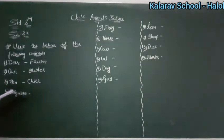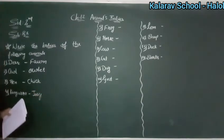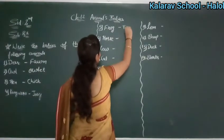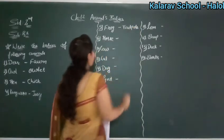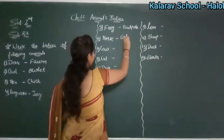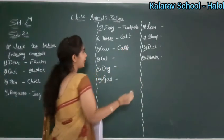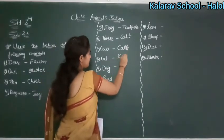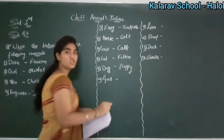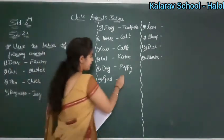Kangaroo — kangaroo mein kya ayega? Joey. So kangaroo — joey. Frog — frog ke baby ko kya bolenge? Tadpole. Phir hai horse — horse ke baby ko kya bolenge? Colt. C-O-L-T. Cow — calf. Calf bolenge? Phir hai cat — kitten. Dog — puppy. Goat — goat mein kya ayega? Kid. So here you will write kid.